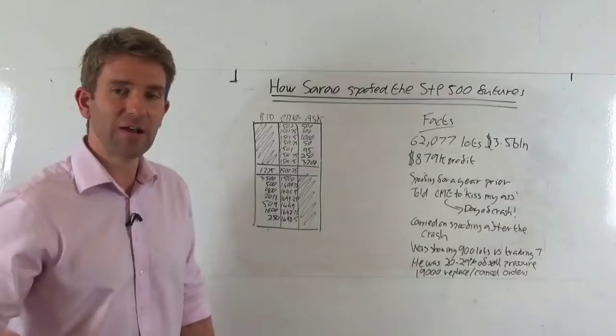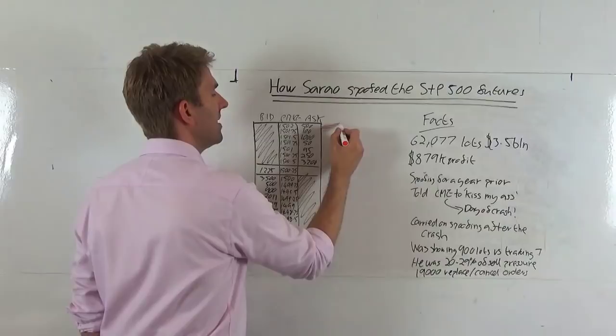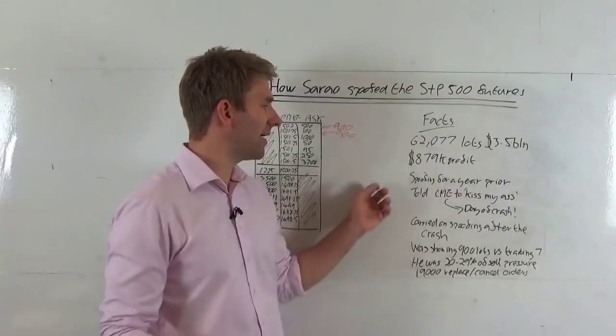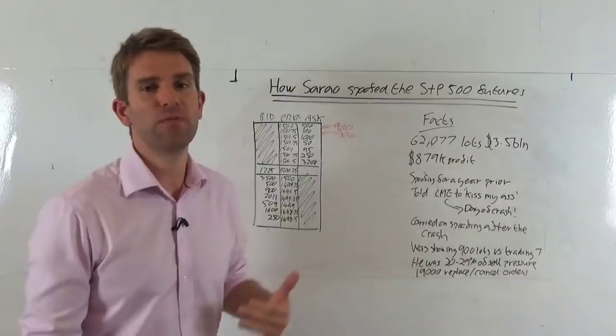Now what Sarao did is he created an algorithm, he had an algorithm designed for him that would place orders into the market on the sell side specifically. He would place 900 here, he would place 900 here, and what would happen is as the market would get close it would automatically cancel them. So he was spoofing like this for a year prior but he was doing it manually. He was placing his orders manually and then as the market got to them he was pulling them away.